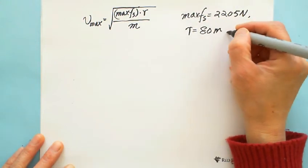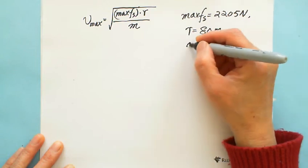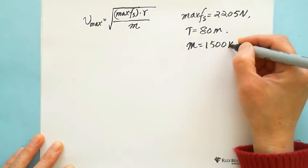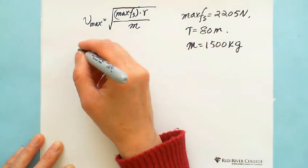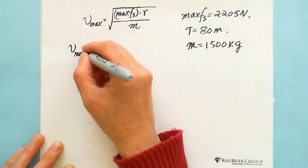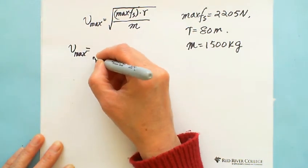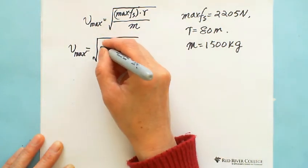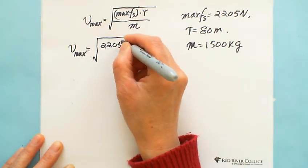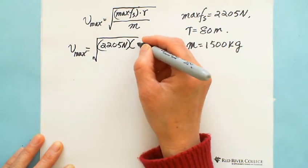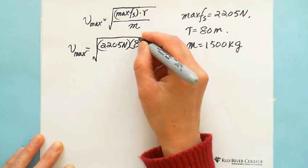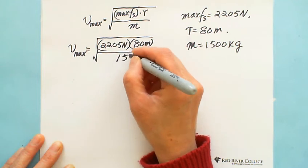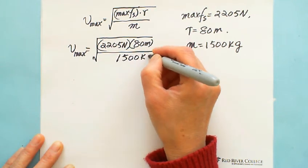Because static friction maximum, maximum static friction we calculated is 2205 N, r equals to the square root of this one, and r equals 80 m, and mass equals 1500 kg, and we can calculate this one. So maximum speed equals square root, this one is 2205 N, and then multiply 80 m, divided by 1500 kg.